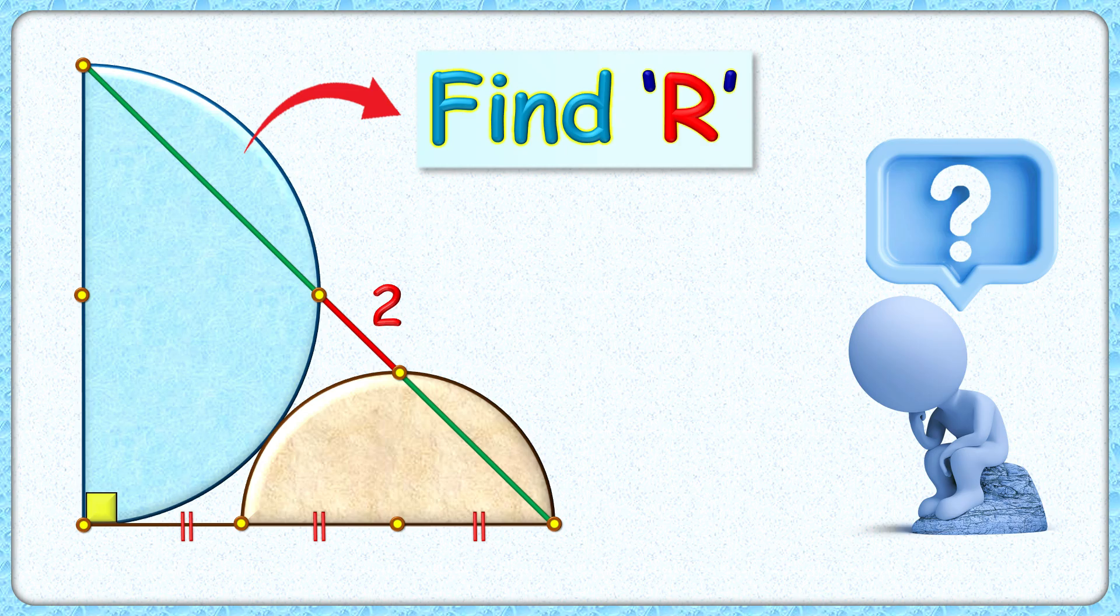This question looks fun to solve. Given are two semicircles such that their diameters are perpendicular to each other. This length here equals the radius of this small brown semicircle.